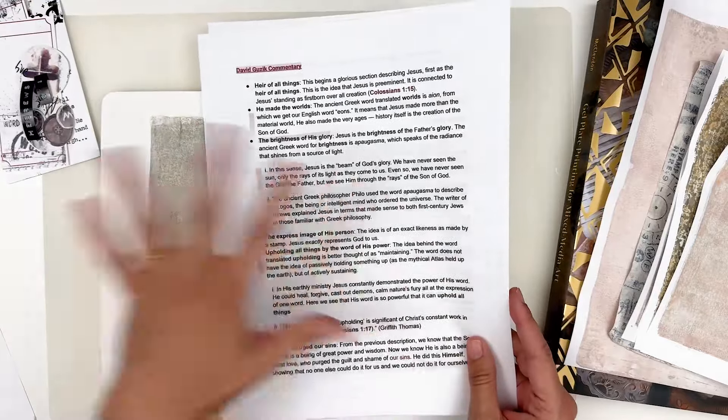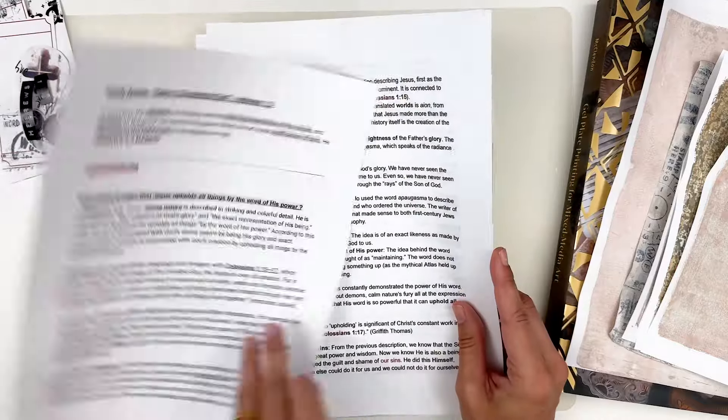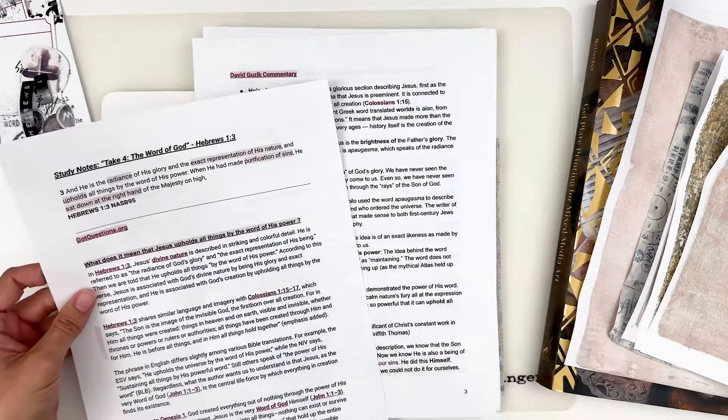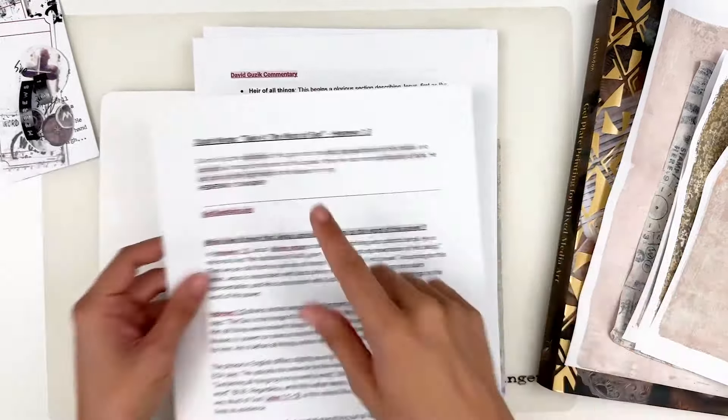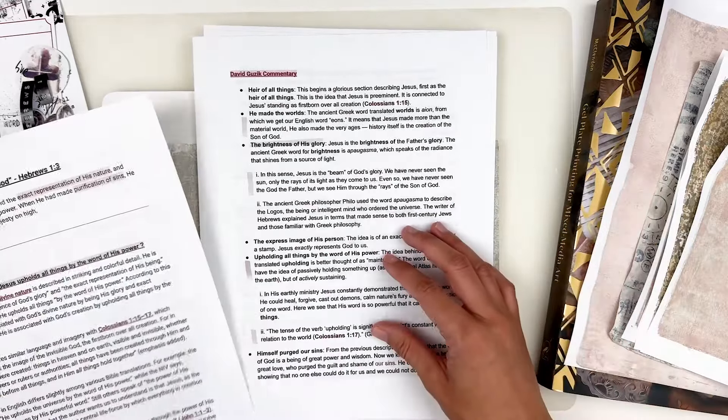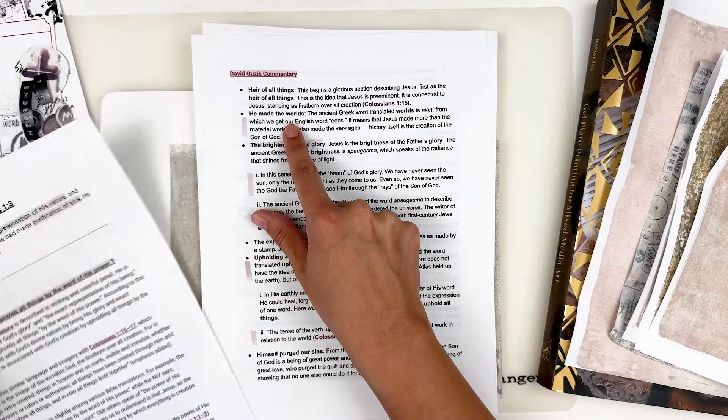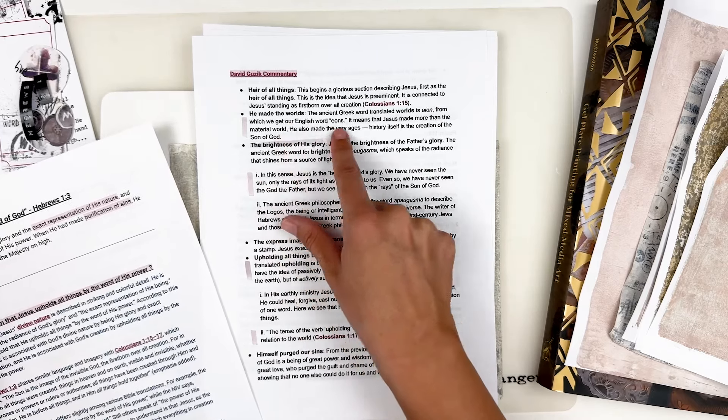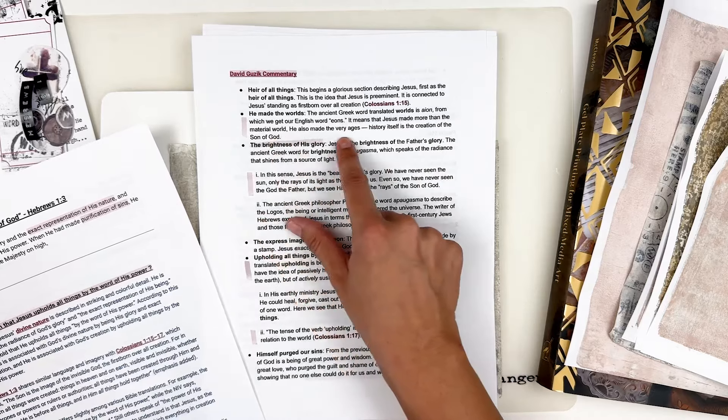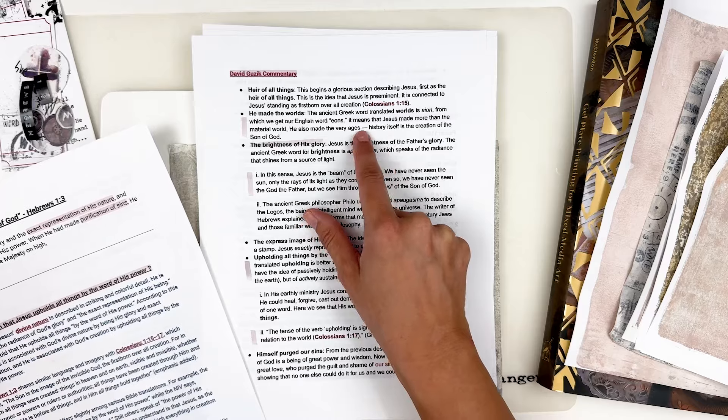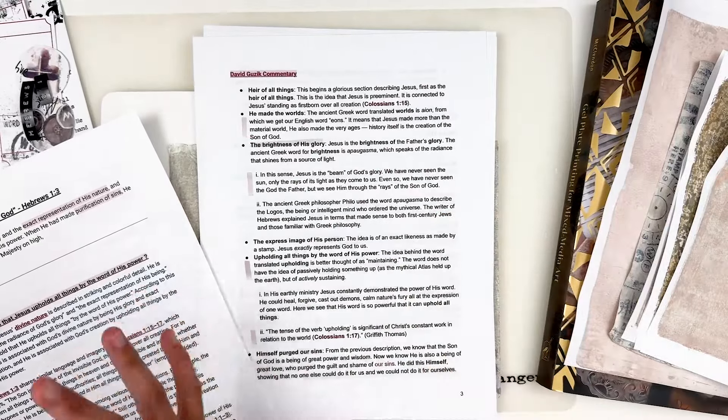For David Guzik commentary. This is what I pull from blue letter Bible app. In reference to the ancient Greek word translated worlds is aeon from which we get our English word eons. It means that Jesus made more than the material world. He also made the very ages history itself is the creation of the son of God. And so I wanted to highlight and just really point out Jesus didn't just come onto the scene in the new Testament. He has been there from the very beginning of time.